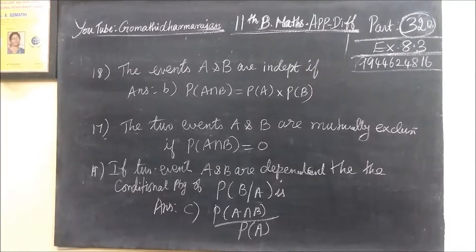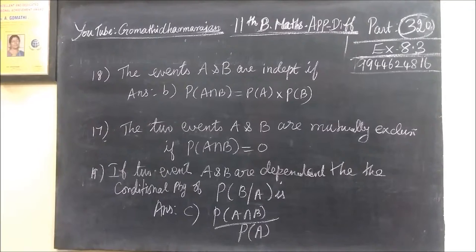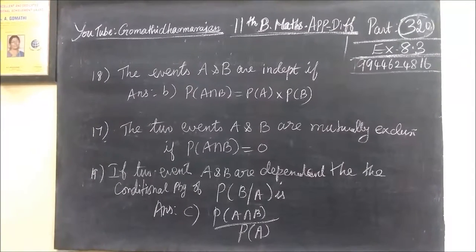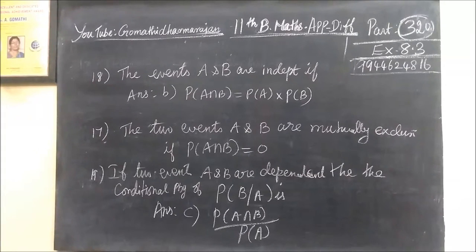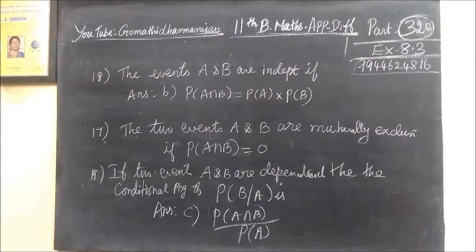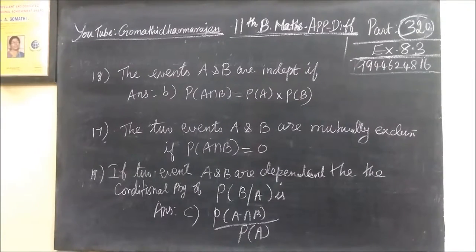Now question number eighteen. The events A and B are independent if P of A intersection B equal to P of A into P of B. And question number seventeen, the two events A and B are mutually exclusive, that means P of A intersection B equal to zero. Because no common event between A and B.